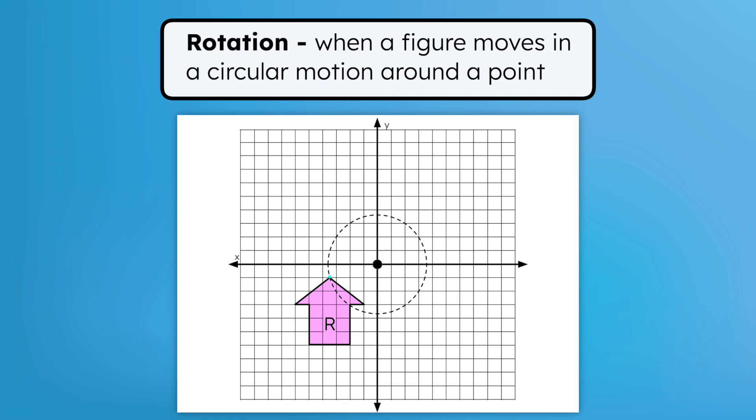For example, this point on the tip of the arrow of figure R will always be the same distance from the origin, and as it rotates around the origin, it naturally creates a circular motion. We can either rotate it clockwise or counterclockwise around the origin.